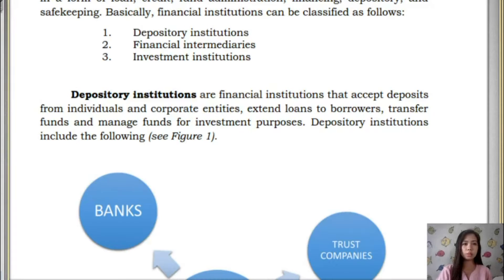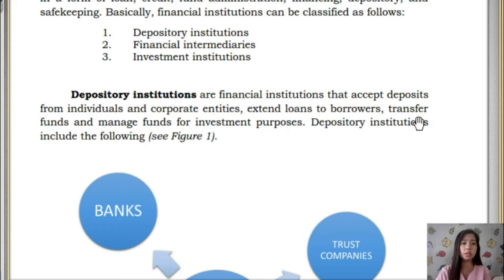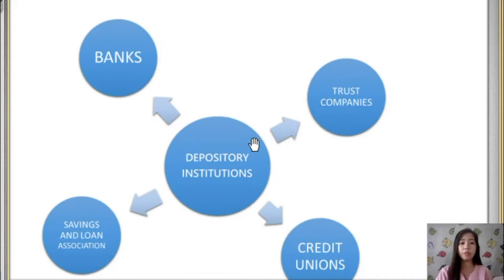Let's start first with Depository Institutions — financial institutions that accept deposits from individuals and corporate entities, extend loans to borrowers, transfer funds, and manage funds for investment purposes. We have four types under Depository Institution: banks, trust companies, credit unions, and savings and loan associations.